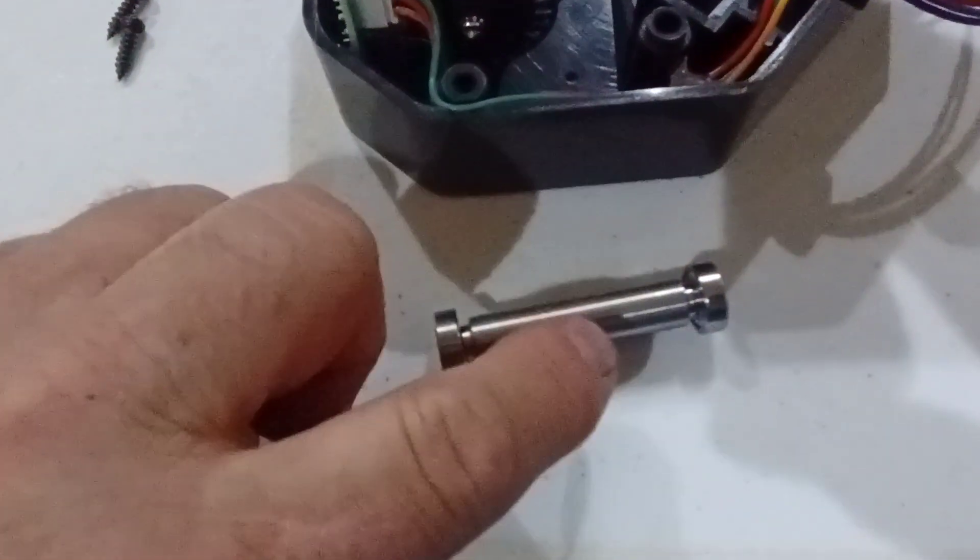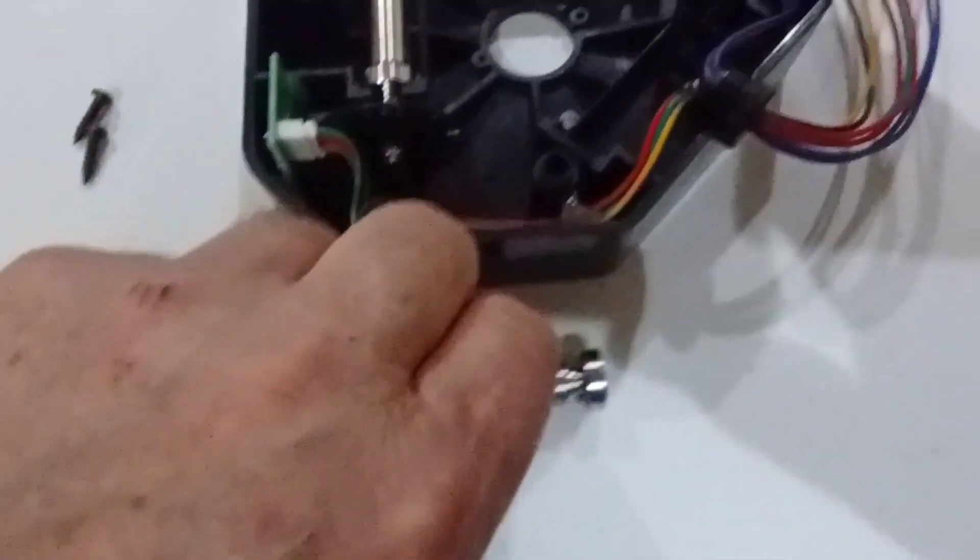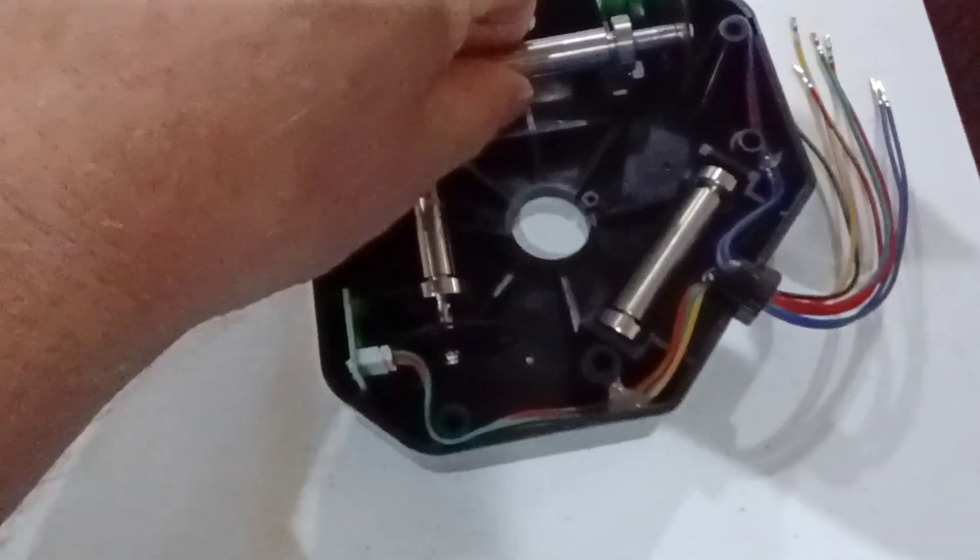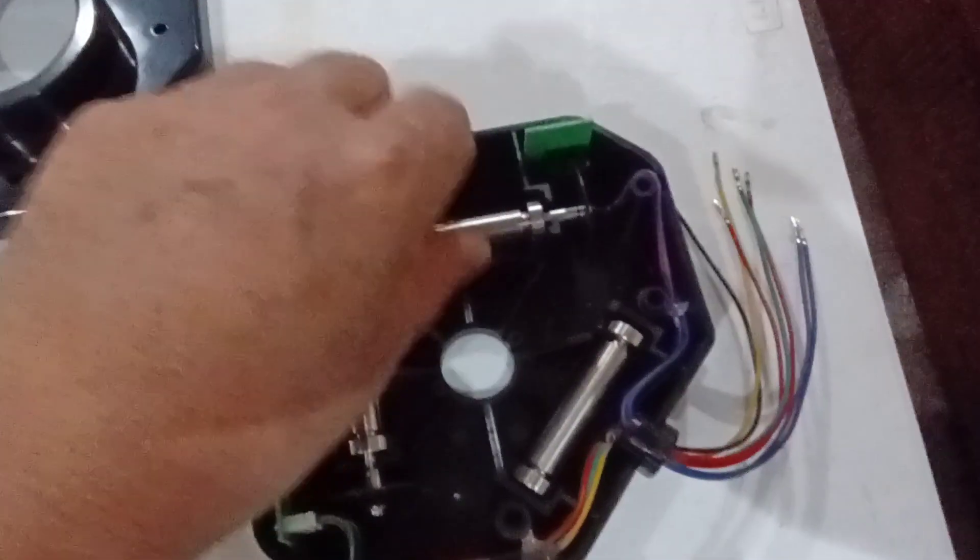You want to clean the very center as it rolls around. You can also spray WD-40 on the roller bearing. Take each one out. Put it back in.